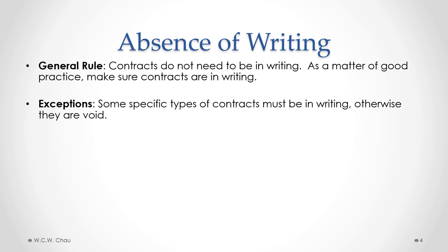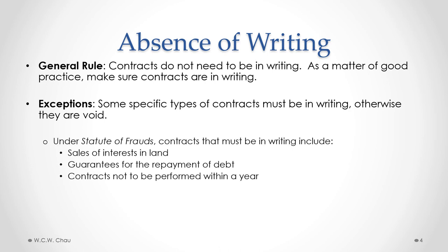There are exceptions where some specific types of contracts have to be in writing in order to be valid. Under legislation called the Statute of Frauds, there are three types of contracts that have to be in writing. The first is contracts for the sale of interests in land — if you are doing a deal to buy real estate, that deal has to be done with a written contract. You cannot do a real estate deal on just a handshake.